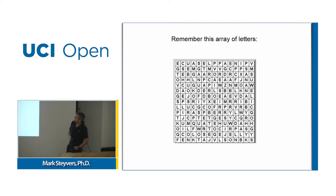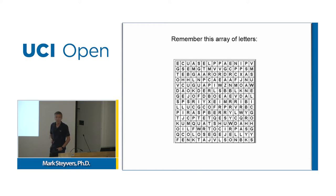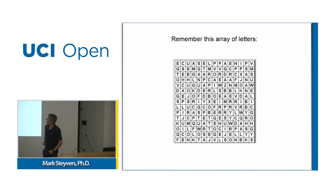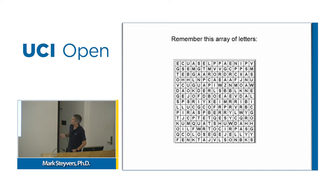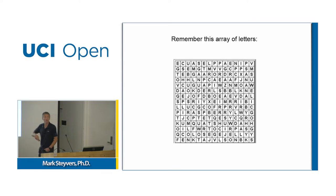You hold on to this array of letters in sensory memory, but the important thing is you have to pay attention to those letters for information to be transferred to short-term memory. Obviously you can't attend to everything, so only a limited amount of information goes through to the next stage.